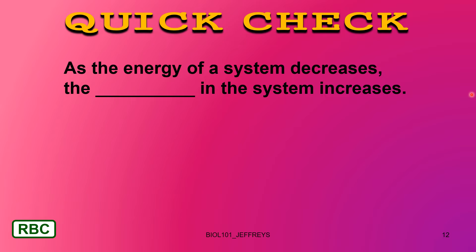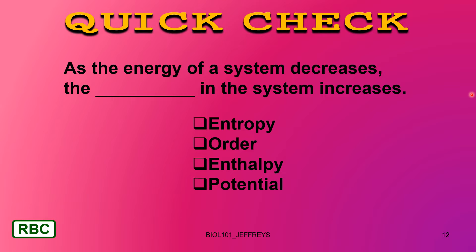Here's another quick check. As the energy of a system decreases, the blank in the system increases. Your choices are entropy, order, enthalpy, or potential. Remember: potential energy is maximum order — we call that enthalpy. As the system becomes more random, as energy is released from the system, things become more random, so entropy increases. If you answered entropy, you are correct.